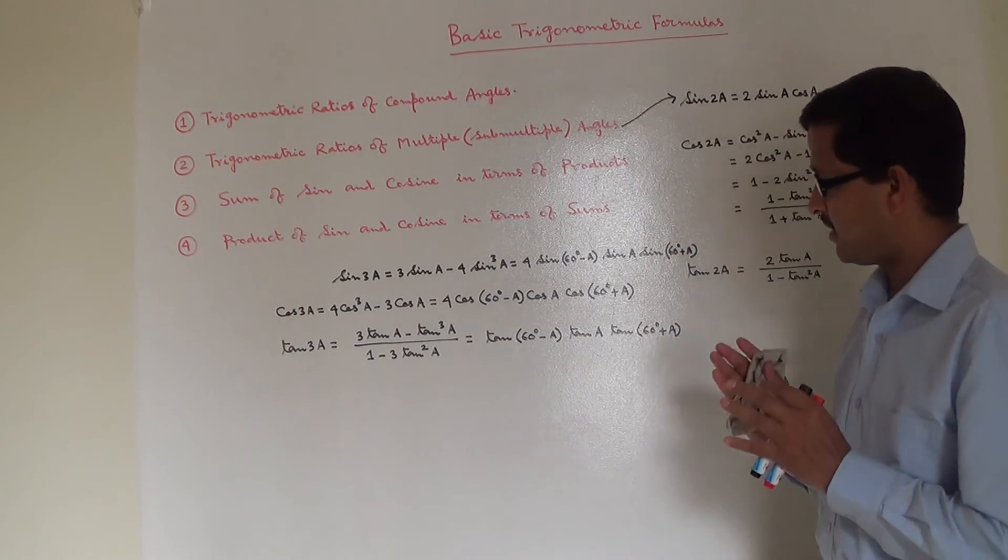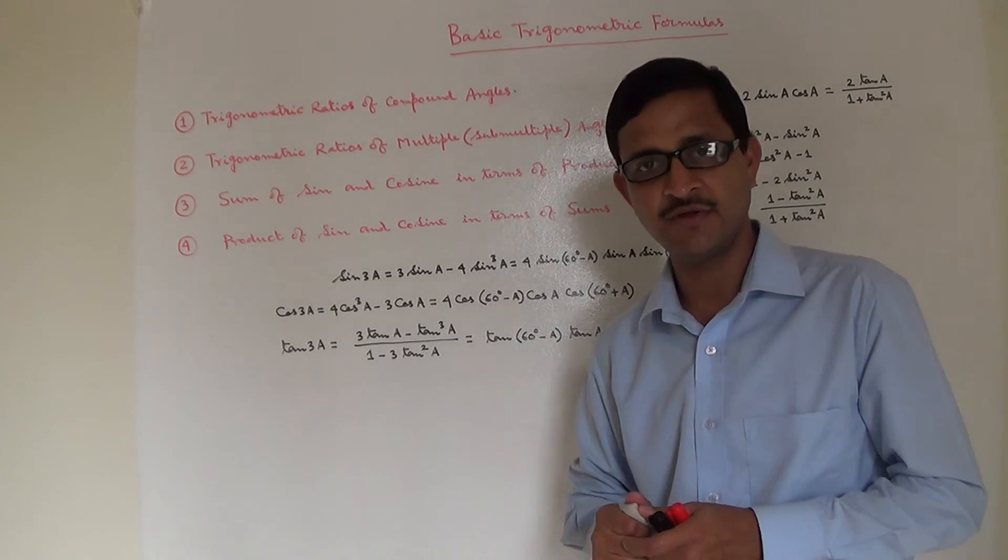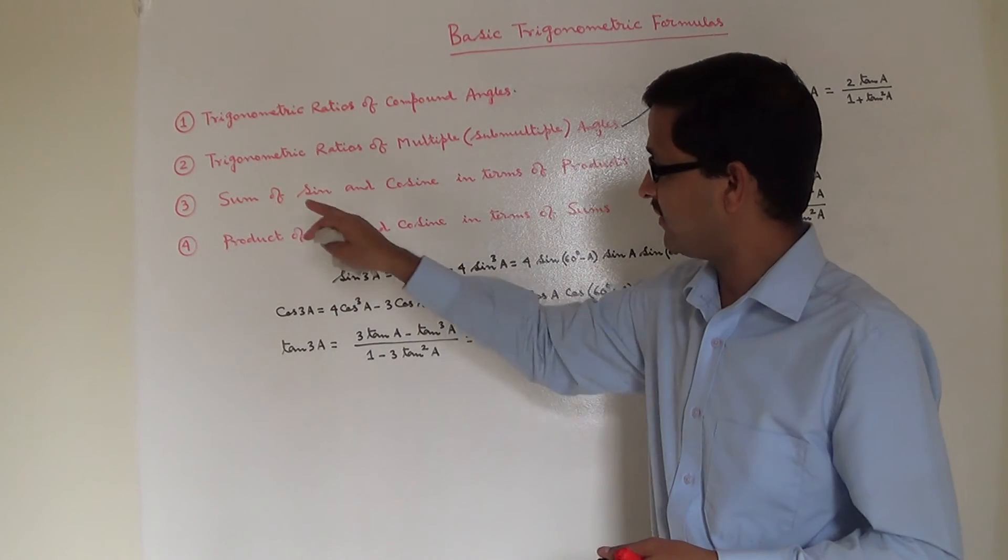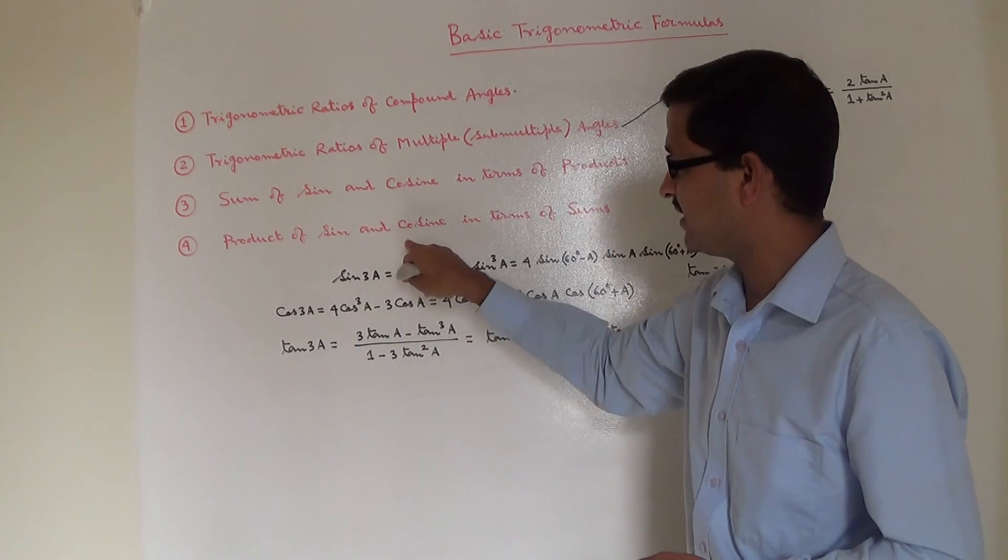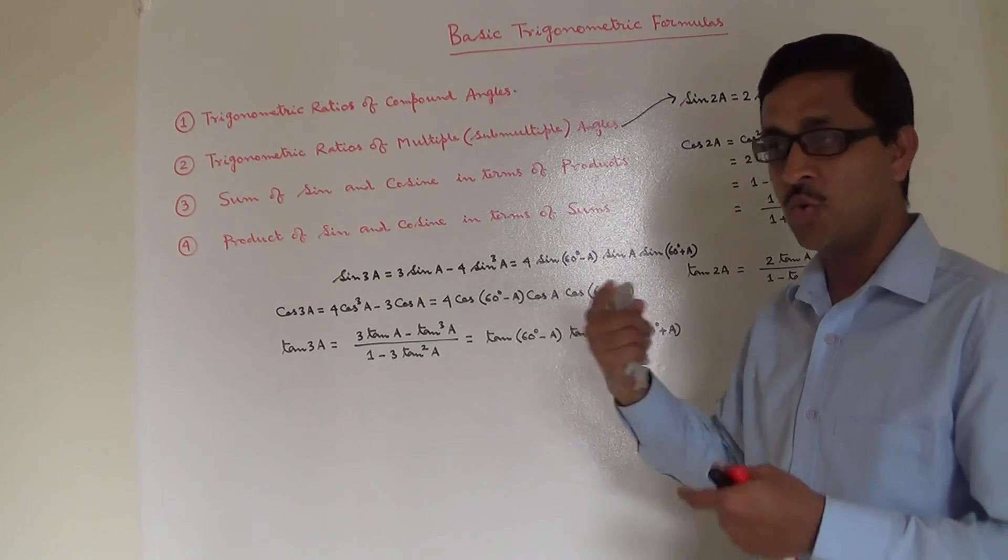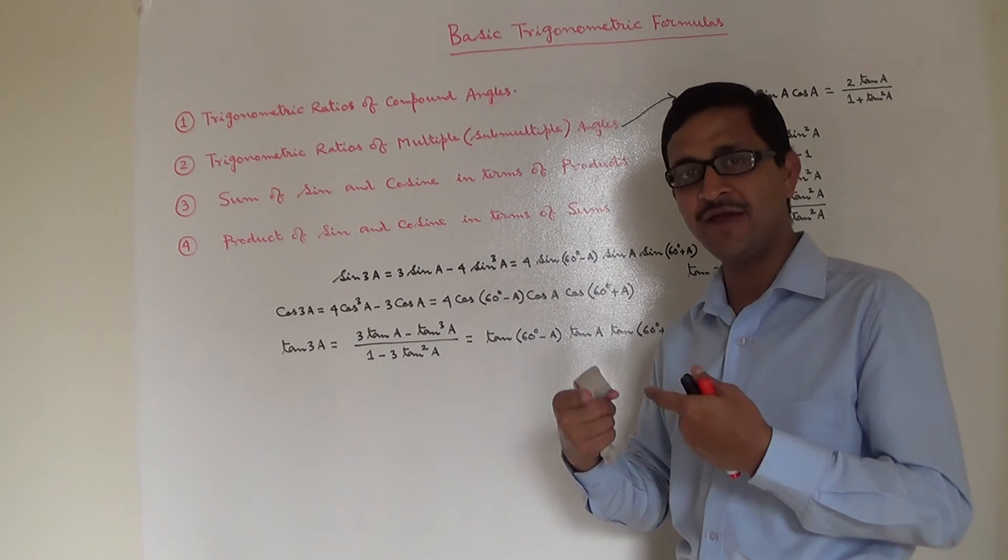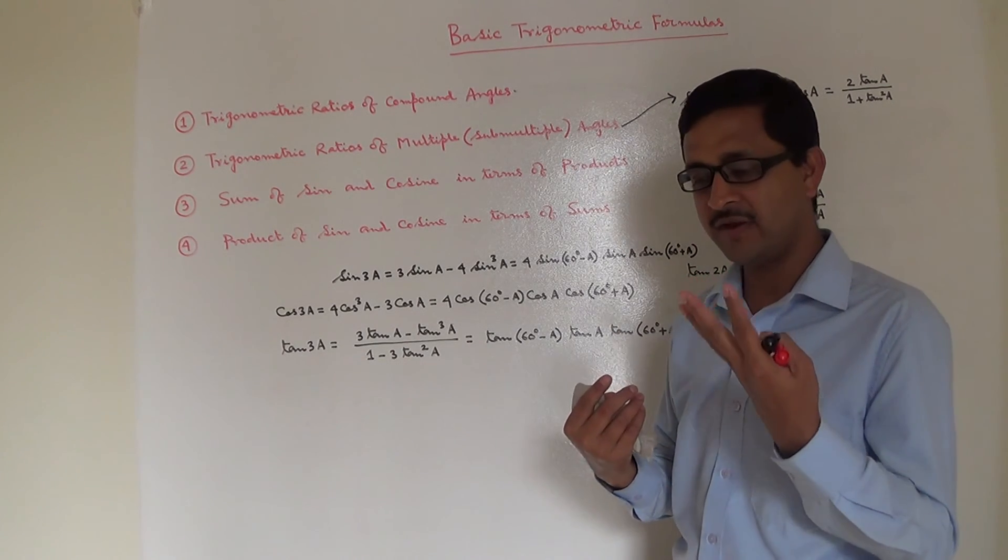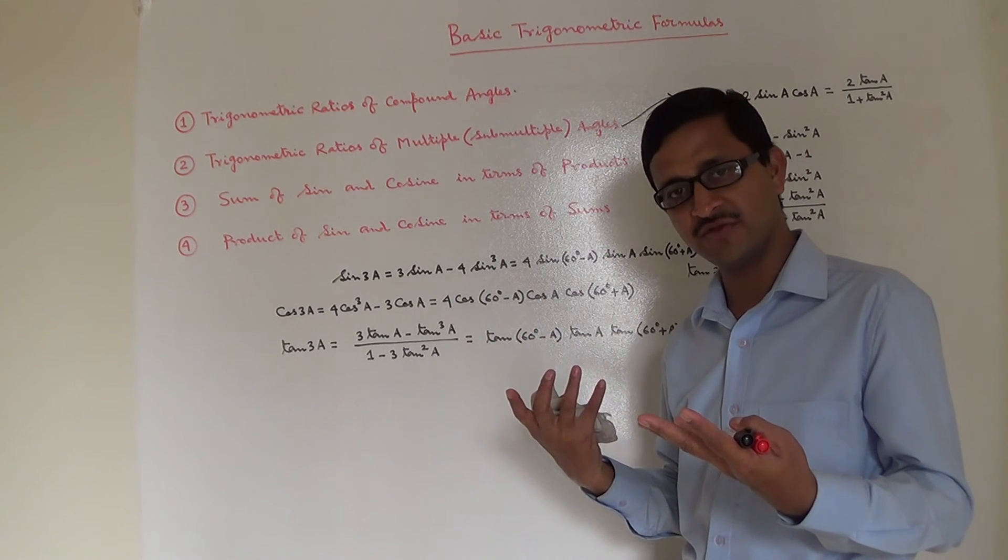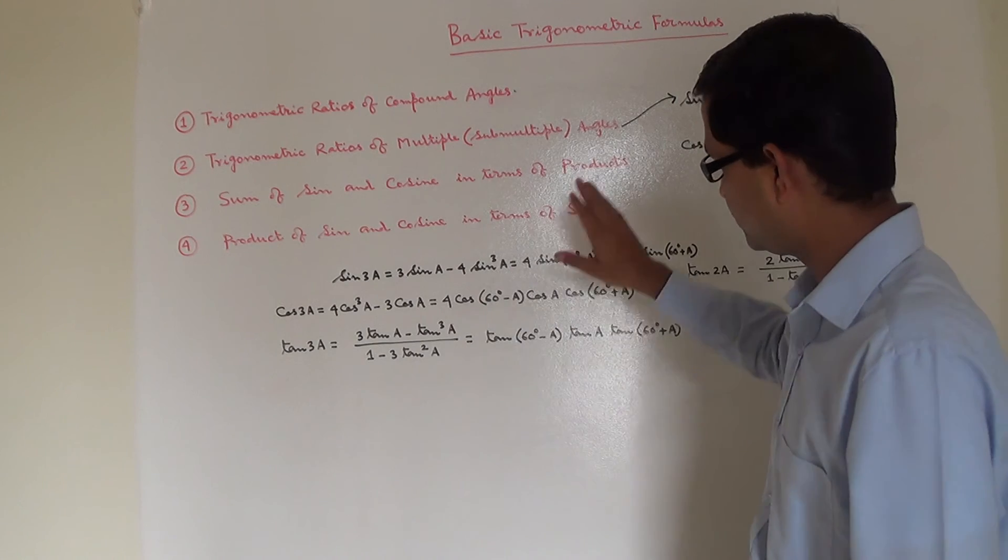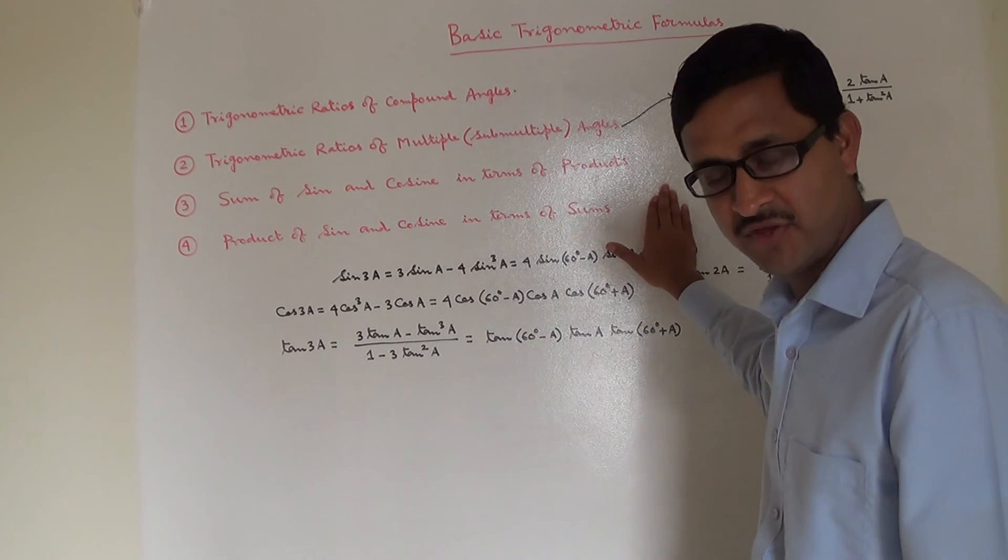So I will suggest you spend a couple of minutes on this one, so that we can look at the other two: sum of sine and cosine in terms of products, and products of sine and cosine in terms of sums. We will have both these things together and I will help you understand, by remembering one, how we can remember the other set of formulas. Before that, I will suggest you spend a couple of minutes to have a look into these formulas. Thank you.